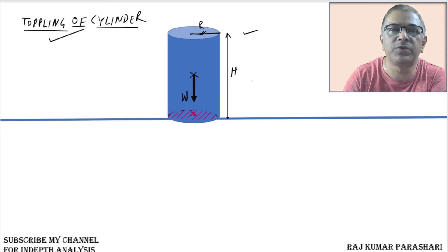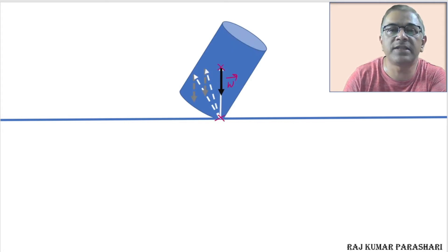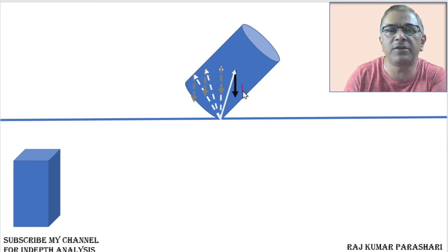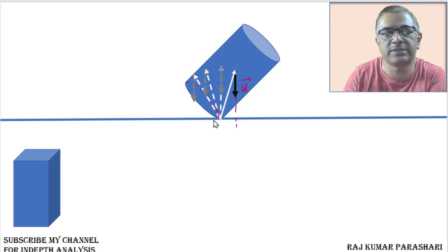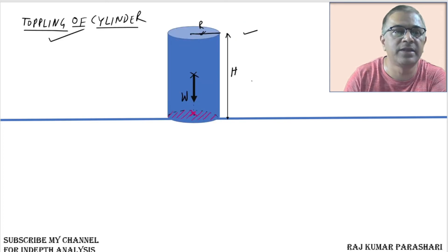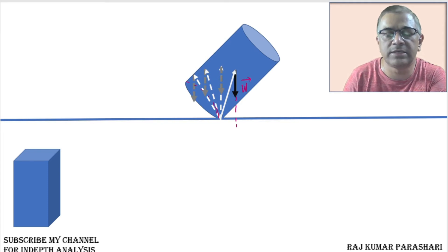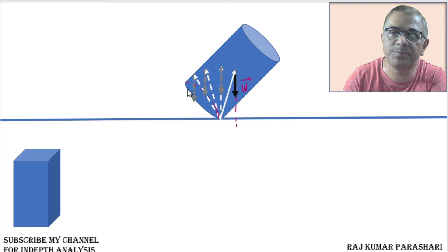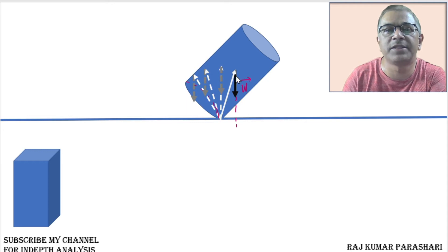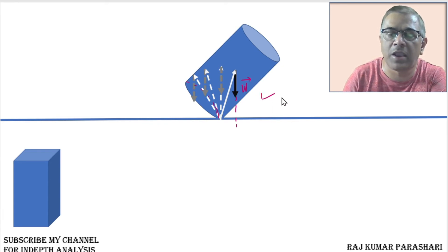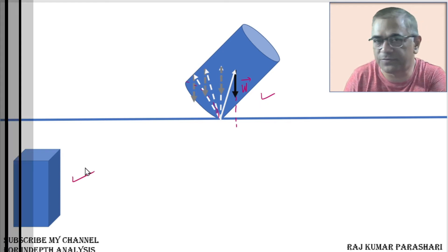It's also likely it may fall back to its original state. Next, if the cylinder is further rotated, the weight of the cylinder — the vector that represents weight — no longer passes through the base of the cylinder. This is the situation when the cylinder will topple. It will fall on the ground and will never be able to achieve its original state. So the object topples provided the weight vector, if extended, does not pass through the base of the object.